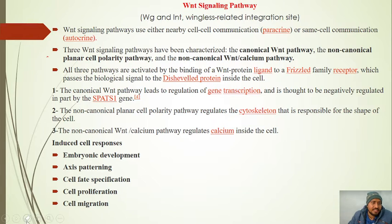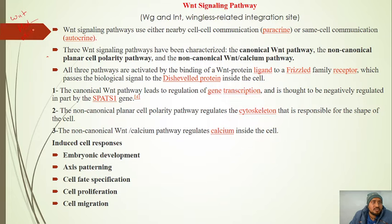Basically, in early development we will study three signalling pathways: the WNT signalling pathway, the hedgehog signalling pathway, and the delta-notch signalling pathway. For delta-notch, we will study C. elegans, and for WNT and hedgehog, we will study Drosophila.